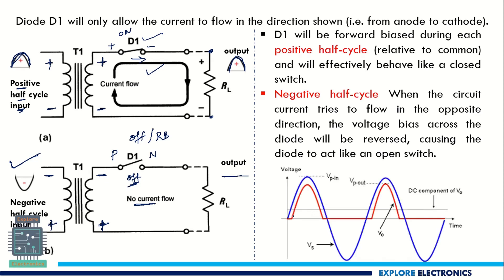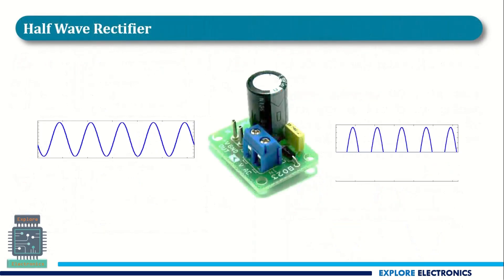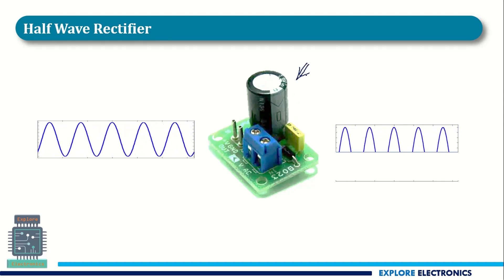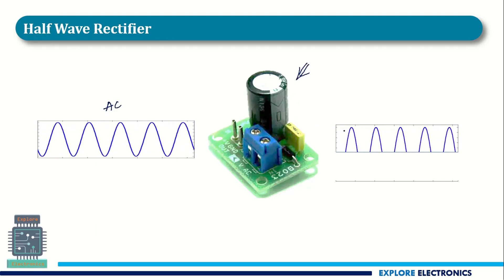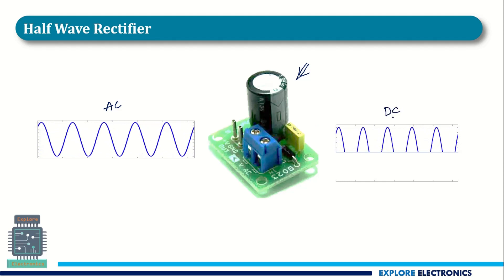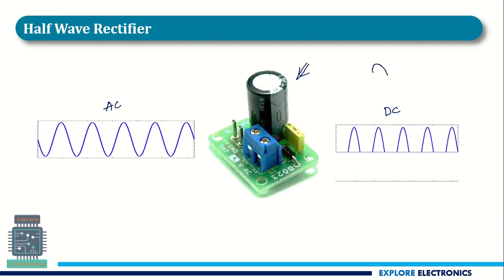Looking at the complete cycle: the blue line indicates the input signal and the red line indicates the output signal. The DC component appears as two pulses per cycle. To eliminate these pulses and get a complete DC signal, we need to address the ripples present — the output at this stage is pulsating DC, consisting of AC pulses.